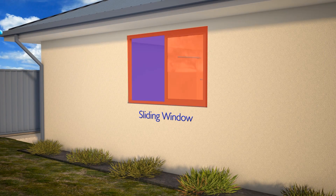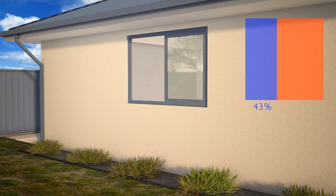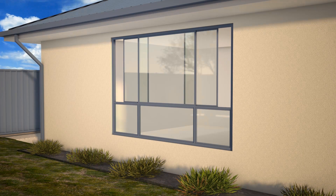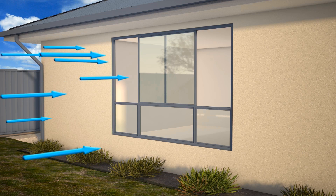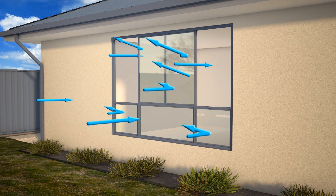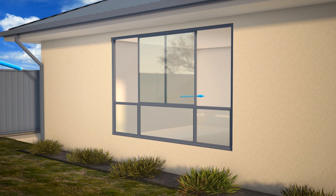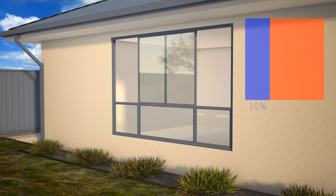Sliding windows have a fixed pane of glass, which prevents ventilation through at least one half of the window. At the sizes more typically seen in Australian homes, there are additional fixed panes in the lower third of the window, which further reduces the ventilation available through sliding windows.